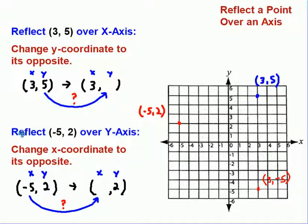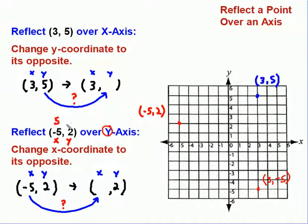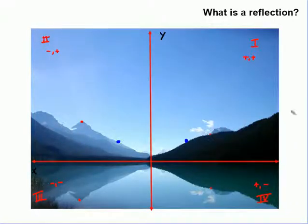Now let's take a look at my second problem: reflect (-5, 2) over the y-axis. So I travel negative five and then up two to get my point. To reflect that across the y-axis, which coordinate should change? The x-coordinate should change. So here's my x-coordinate, negative five, and my y-coordinate, two. My x-coordinate should change to its opposite — that should be positive five — and the y-coordinate stays the same since we're flipping across the y-axis. So we get point (5, 2). Moving five along the x-axis and two along the y-axis — it certainly is a reflection, just like in our mountain picture.